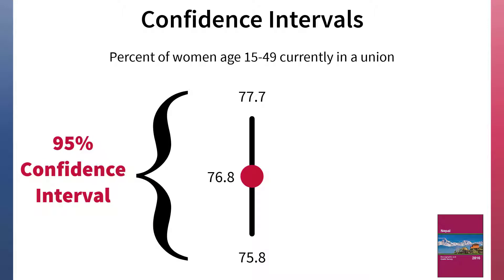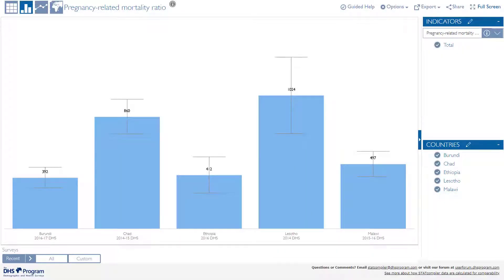Here you can see that the 95% confidence interval for the percentage of women age 15 to 49 in Nepal who are currently in a union ranges from 75.8% to 77.7%. This means that if we drew 100 samples asking the same question each time, we would expect the resulting estimates to be in this range 95 out of 100 times. Confidence intervals for estimates of the pregnancy-related mortality ratio are often wider than confidence intervals around DHS estimates for other indicators.